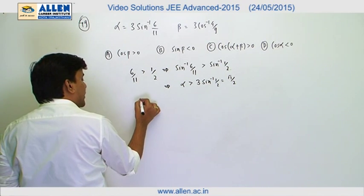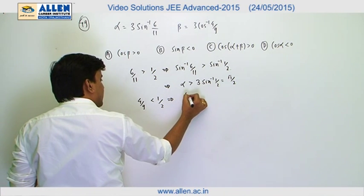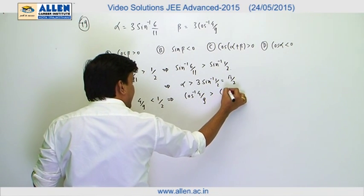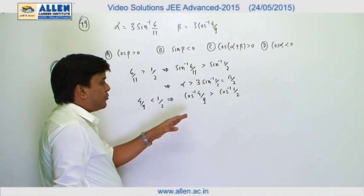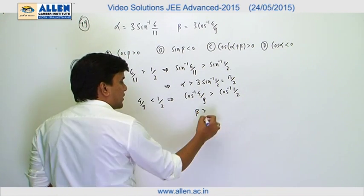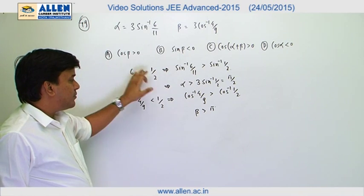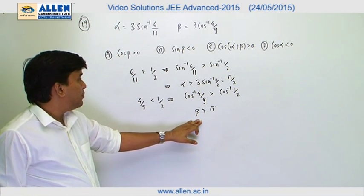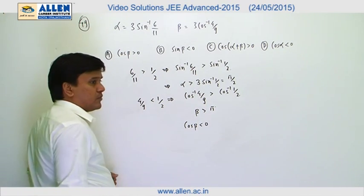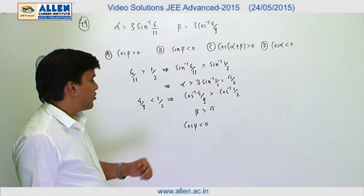For beta: 4/9 < 1/2, and since cos⁻¹ is a decreasing function, cos⁻¹(4/9) > cos⁻¹(1/2) = π/3. Multiplying by 3, beta > π. So cos beta is negative since beta is slightly greater than π, placing it in the third quadrant. Similarly, sin beta is also negative in the third quadrant.